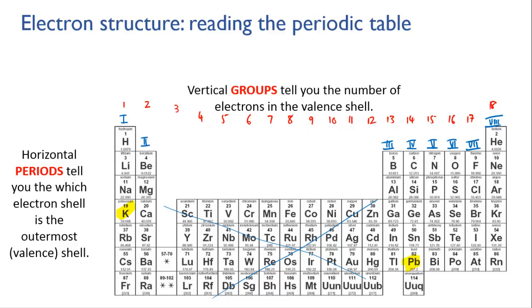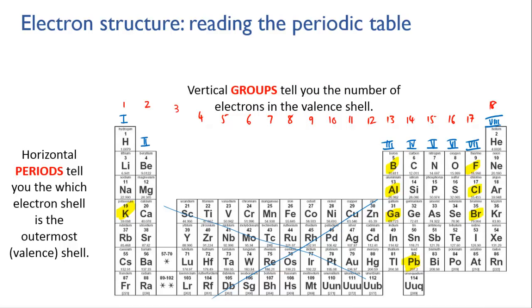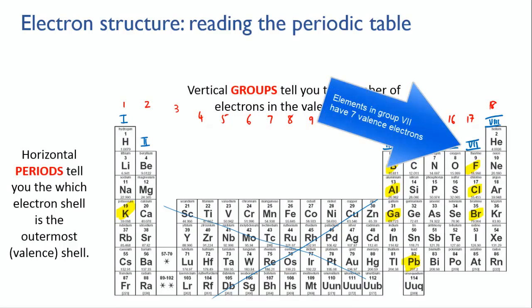So for instance, boron, aluminum and gallium are all in group 3. They each have 3 electrons in their outermost shell. While for instance, fluorine, chlorine and bromine, they're in group 7. They all have 7 valence electrons.